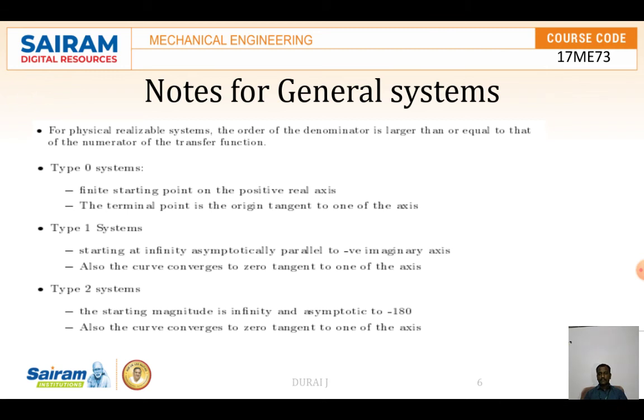Type 2 system: the starting magnitude is infinity and asymptotic to -180°. Also the curve converges to 0 tangent to one of the axes.